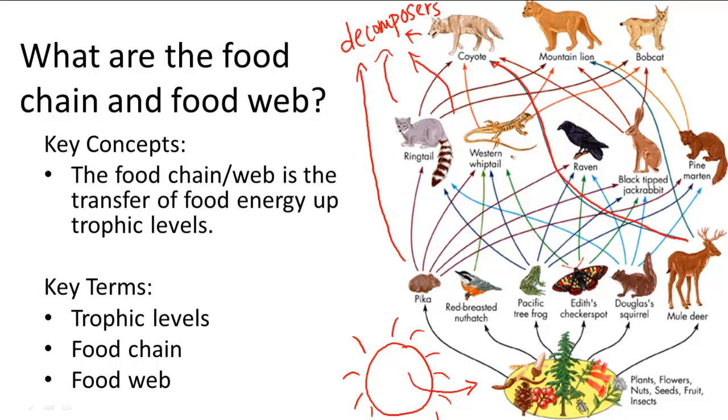The last thing to note is that the two examples of the food chain and food web that I showed you are both terrestrial examples. But there are also marine food chains and food webs that are separate from these.